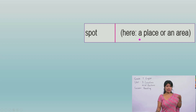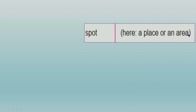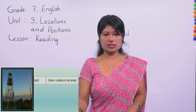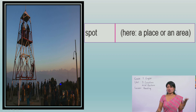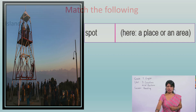Are you clear? Next word - the final word: Spot. Here in this lesson, spot means a place or an area. Any place, any spot. For example, this is a picture from Nagarkot - Nagarkot is one spot, one place. This is an example of spot. And this is the end of vocabularies.